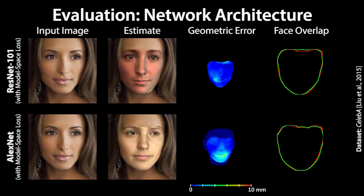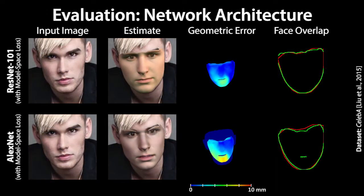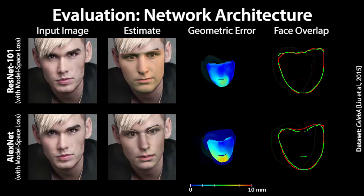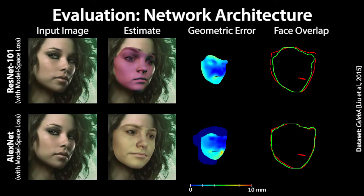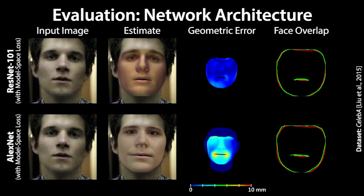We next compare different network architectures. ResNet-101 leads to slightly better geometry estimates than AlexNet, but does not handle skin reflectance and illumination as well. We use AlexNet, as it is 10 times faster to train and run than ResNet-101.